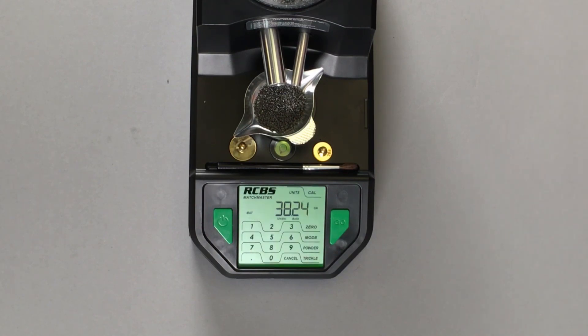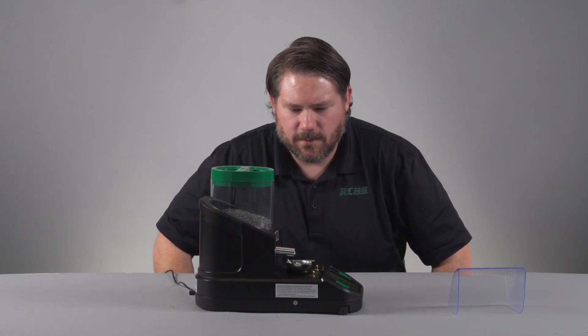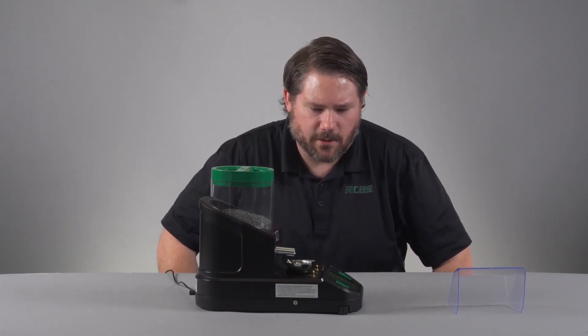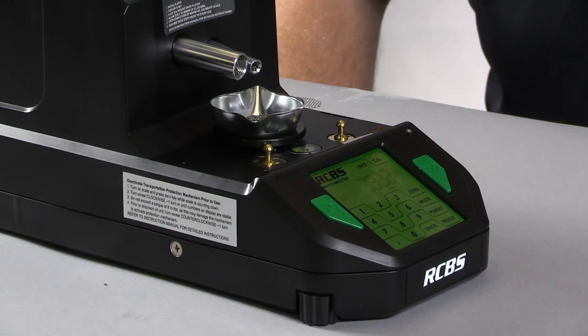As you can see now, the small tube is in a little bit different setting. It's trickling in about a kernel to two kernels of powder on each time that it starts.